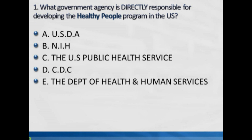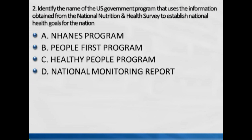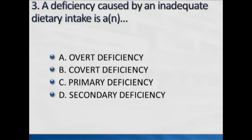Quiz question one: What government agency is directly responsible for the development of the Healthy People program in the United States? The correct answer is the Department of Health and Human Services. Question two: Identify the name of the US government program that uses information obtained from the National Nutrition Health Survey to establish national health goals. The correct answer is the Healthy People program. Question three: A deficiency caused by an inadequate dietary intake is — the correct answer is a primary deficiency.